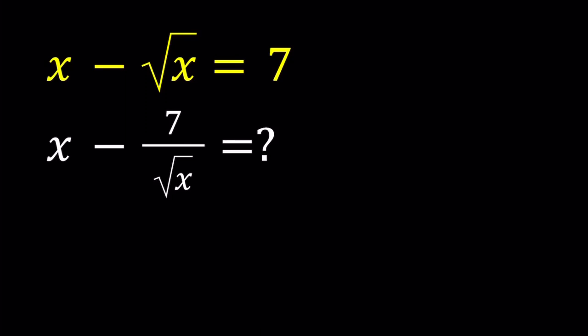Hello, everyone. In this video, we're going to be dealing with radical expressions. We're given x minus square root of x equals 7, and we're going to evaluate x minus 7 divided by square root of x. I'll be presenting two methods, and let's start with the first one.